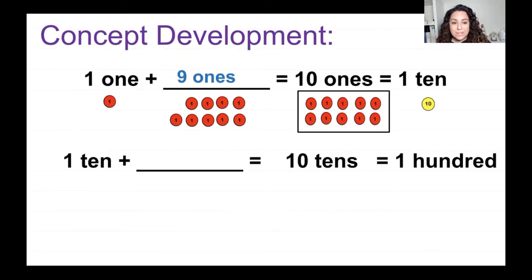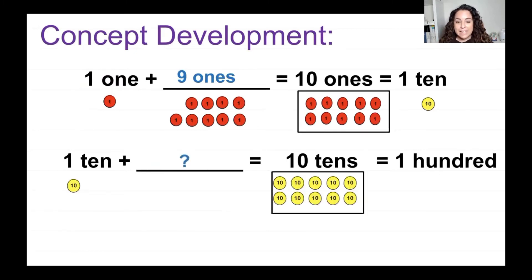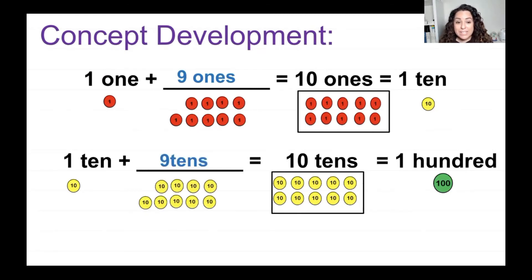Now, what if instead of ones I have tens? So I have 1 ten plus blank is equal to 10 tens, and that is equal to 100. Let me draw a picture: I have 1 ten, then 10 tens, and remember that equals 100. Instead of saying nine ones, I'm going to say nine tens, because 1 ten plus nine tens is equal to 10 tens. One plus nine equals 10, and that is equal to 100.